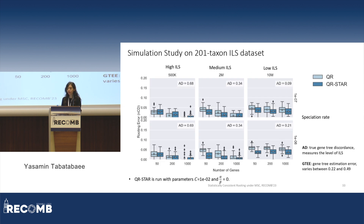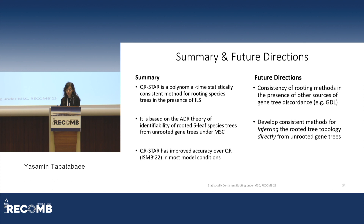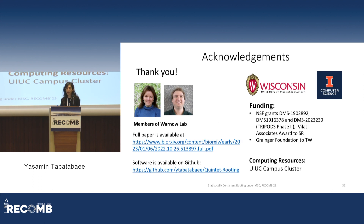On simulated datasets, QR* improves over QR in most model conditions. The only exception is the top-left panel, corresponding to the case with the highest ILS and very high gene tree estimation error — the only condition where QR* performs worse than QR. In summary, QR* is a polynomial-time, statistically consistent method for rooting species trees in the presence of ILS. It is based on the identifiability theory of rooted five-taxon trees from unrooted gene trees under MSC, and it has improved accuracy over the preceding QR method. I would like to thank my co-authors, members of the Warnow Lab for their feedback, and all funding sources.